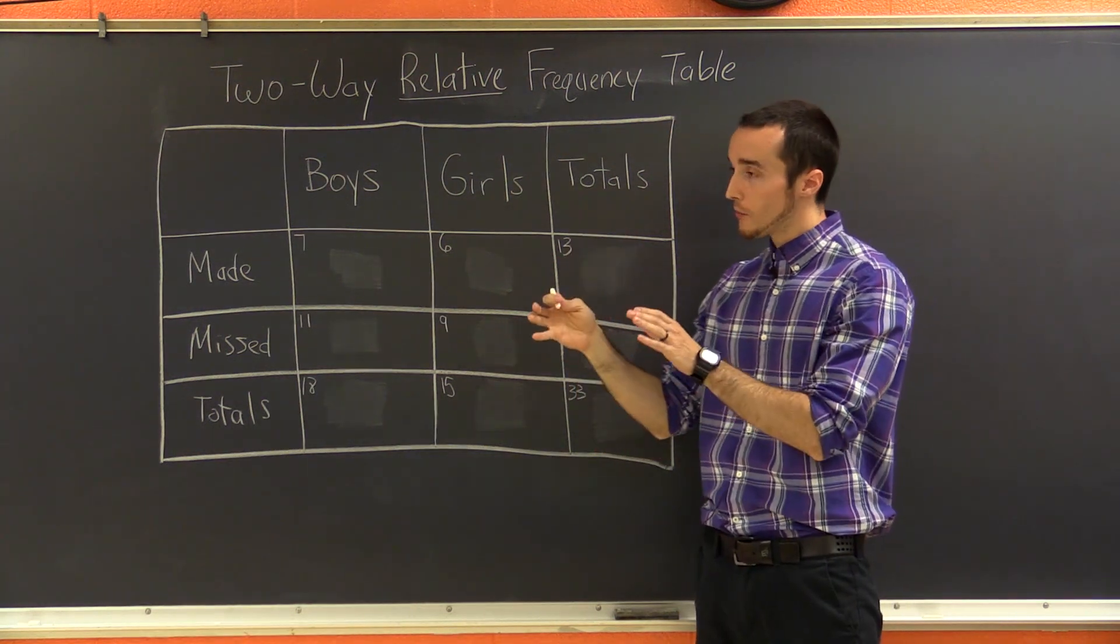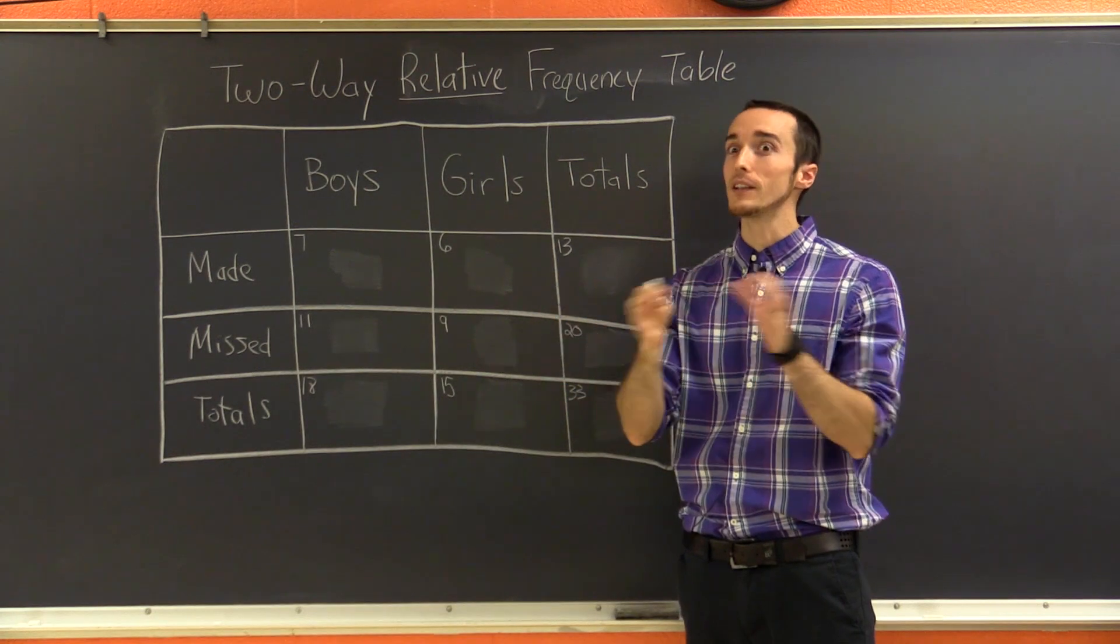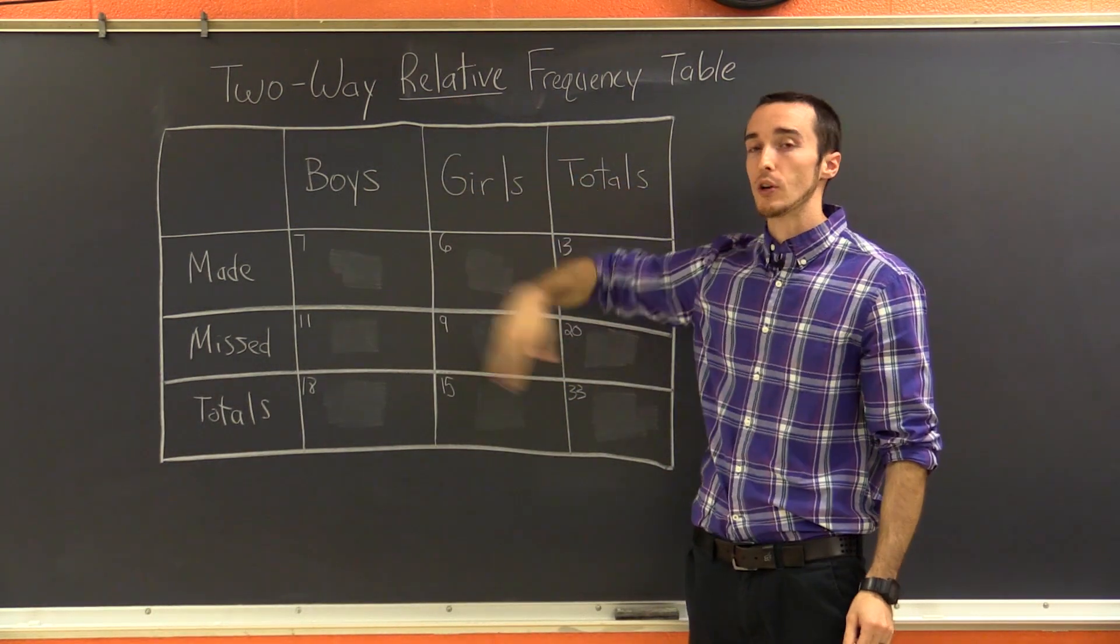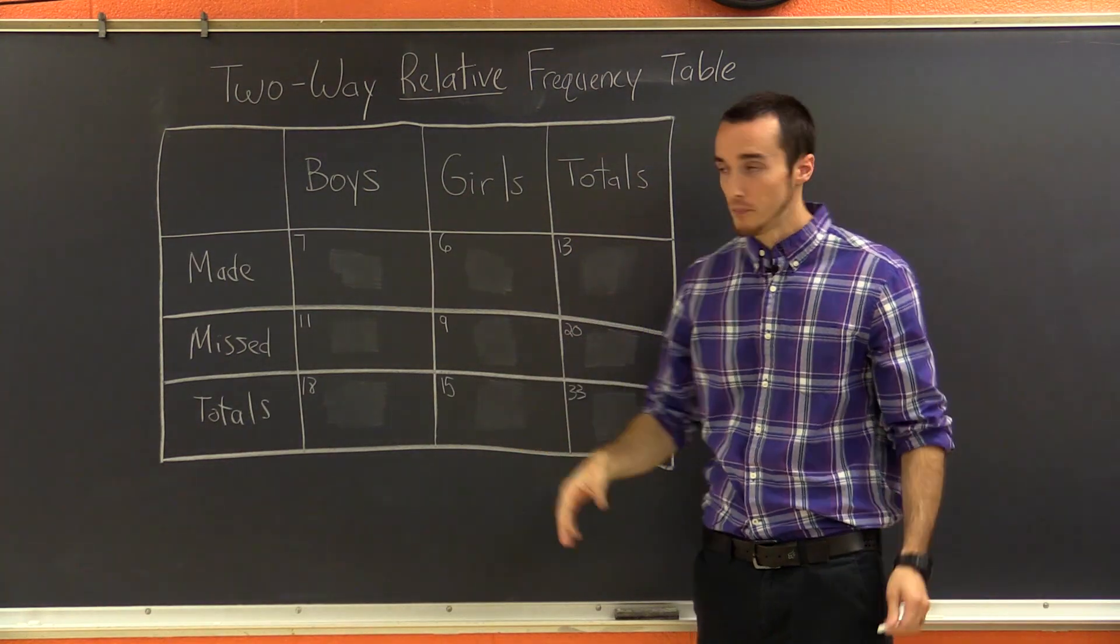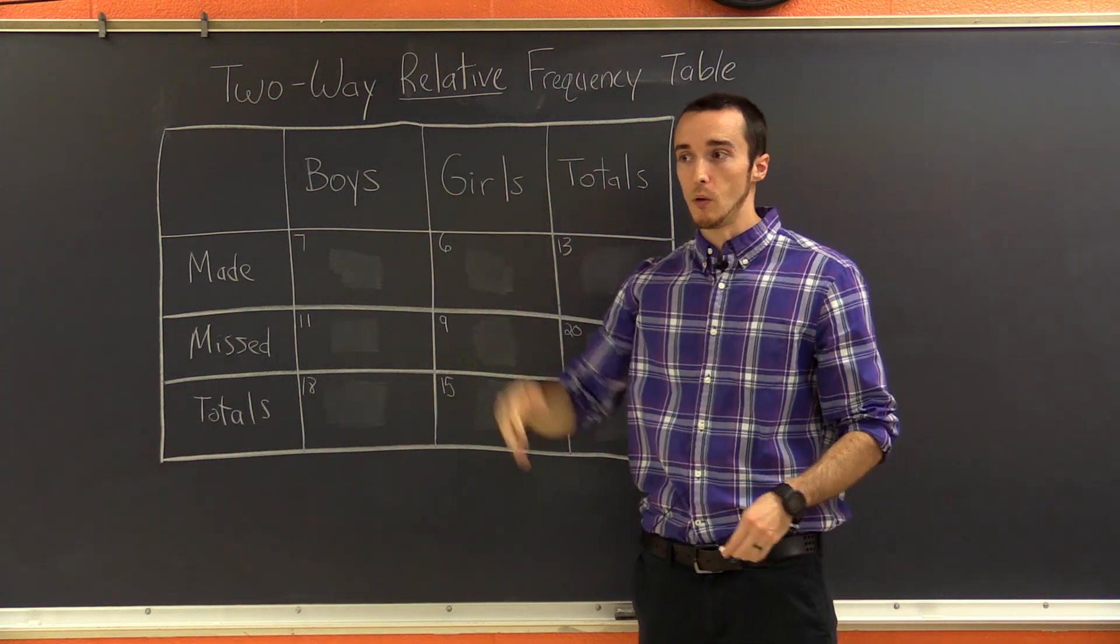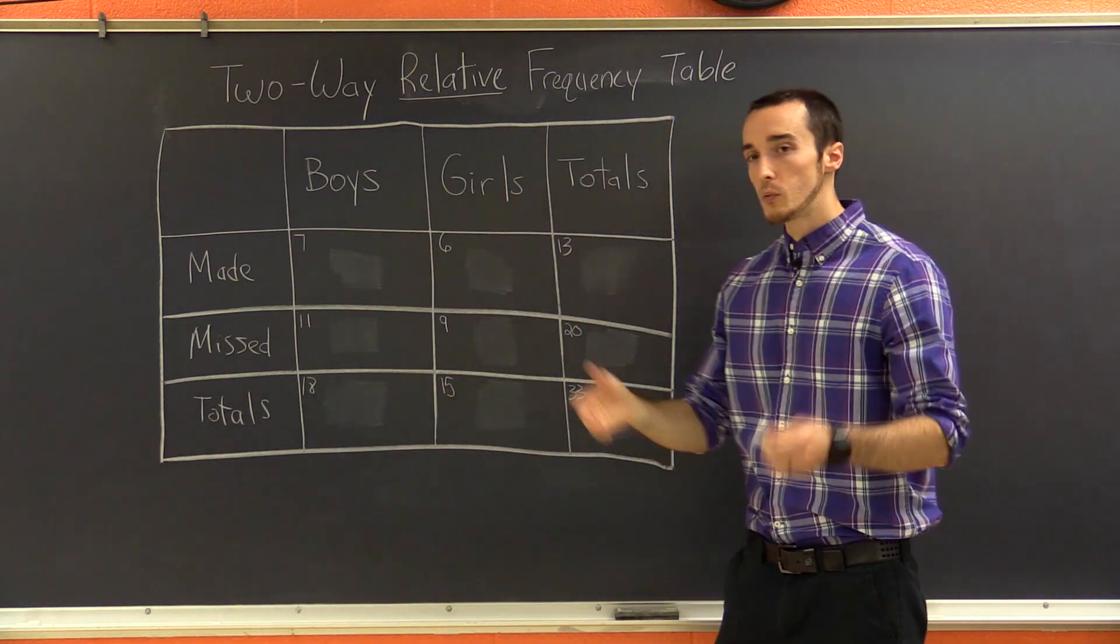The difference between a two-way frequency table and a two-way relative frequency table is that with a relative frequency table, we're turning them into percentages. So for instance, seven boys made a basket, but in a relative frequency table, we want that as a percentage. So it's really easy.